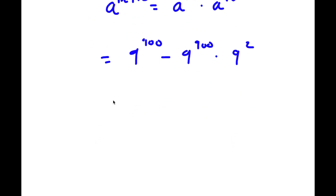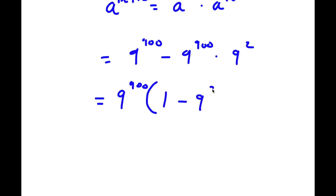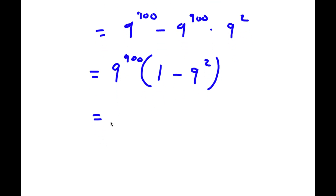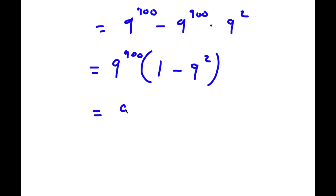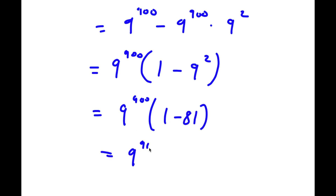From here, if I factor out 9 to the power of 900, I get 9 to the power of 900 times 1 minus 9 to the power of 2. Now 9 to the power of 2 is simply equal to 81. So now I have 9 to the power of 900 times 1 minus 81, and 1 minus 81 is equal to negative 80.